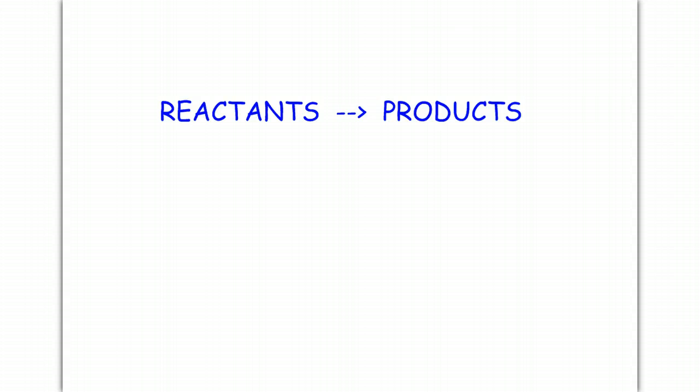When you have a chemical reaction occur, there are two parts to a chemical reaction. The first part is the before, which are my reactants, and the second part are the products, which come after. So we have a before and an after. The reactants are what I have before the reaction and the products are what I have after the reaction.